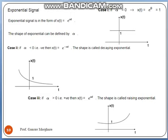The next signal is the exponential signal, generally denoted by e^(αt), where α determines the shape of the exponential. Depending on the value of α we have three cases: if α=0, e^0 = 1, which is a constant function; if α < 0, it gives a decaying exponential; and if α > 0, it gives a rising exponential. These are the basic signals commonly used for understanding signals and systems.